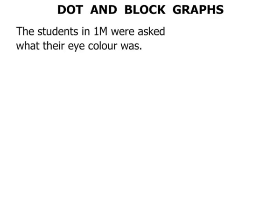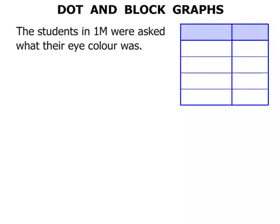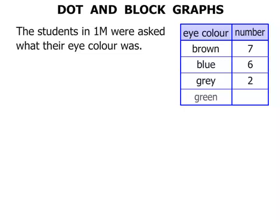Dot and Block Graphs. The students in 1M were asked what their eye colour was. The results were put in this table, showing eye colour and the number of students. For brown there were seven students, for blue there were six students, for grey there were two students, and for green there were four students.